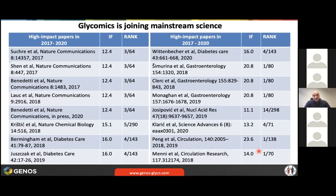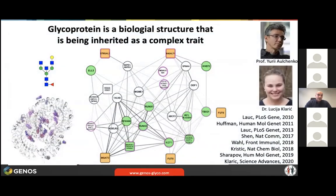Nowadays, even adding glycans to a clinical study helps it reach a better journal. I hope in a couple of years it won't be possible to publish a good clinical paper without at least some glycan data. What we are now trying to do is merge these different datasets. The first thing is linking genetic data, and what we learned is that a glycoprotein is a biological and chemical structure, but genetically it is a complex trait — multiple genes and their variants interact to define the final structure added to a specific glycoprotein.